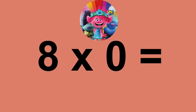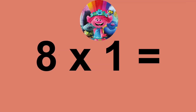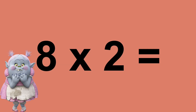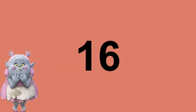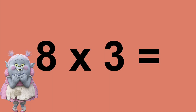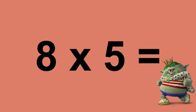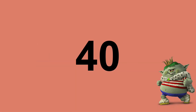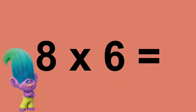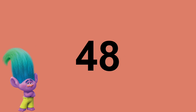Eight times zero equals zero. Eight times one equals eight. Eight times two equals sixteen. Eight times three equals twenty-four. Eight times four equals thirty-two. Eight times five equals forty. Eight times six equals forty-eight.